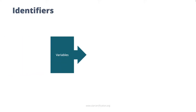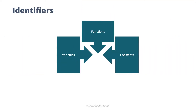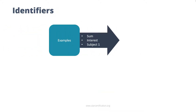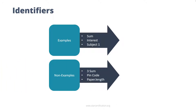To refer to any variables, functions or constants in the program, you need to assign an identifier to it. You can use any character from the defined character set of C language. Always start an identifier with an alphabet or underscore. The identifier should contain alphabets, digits and underscore. Do not include any white space within the identifier and do not use keywords as identifiers. Some examples and non-examples of identifiers are shown on the screen.